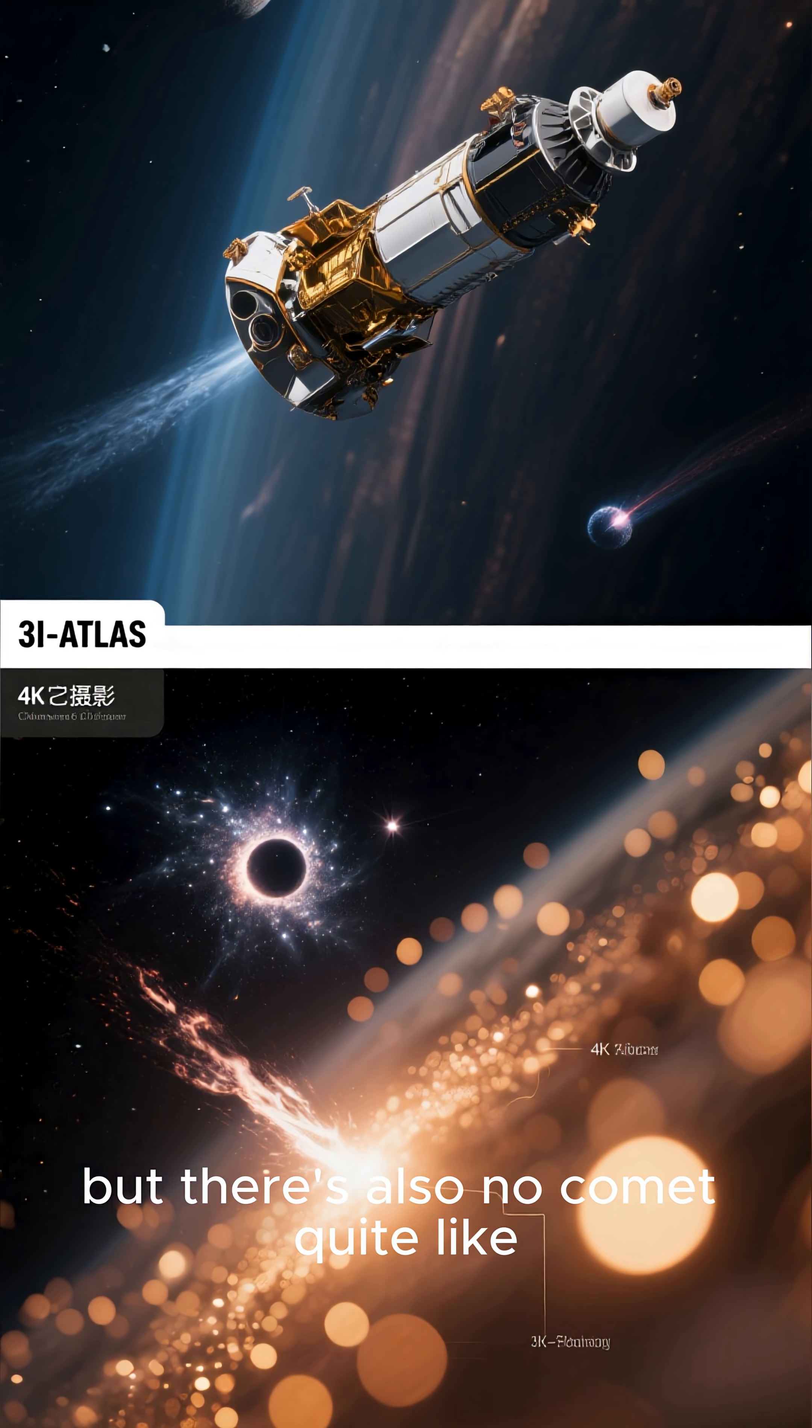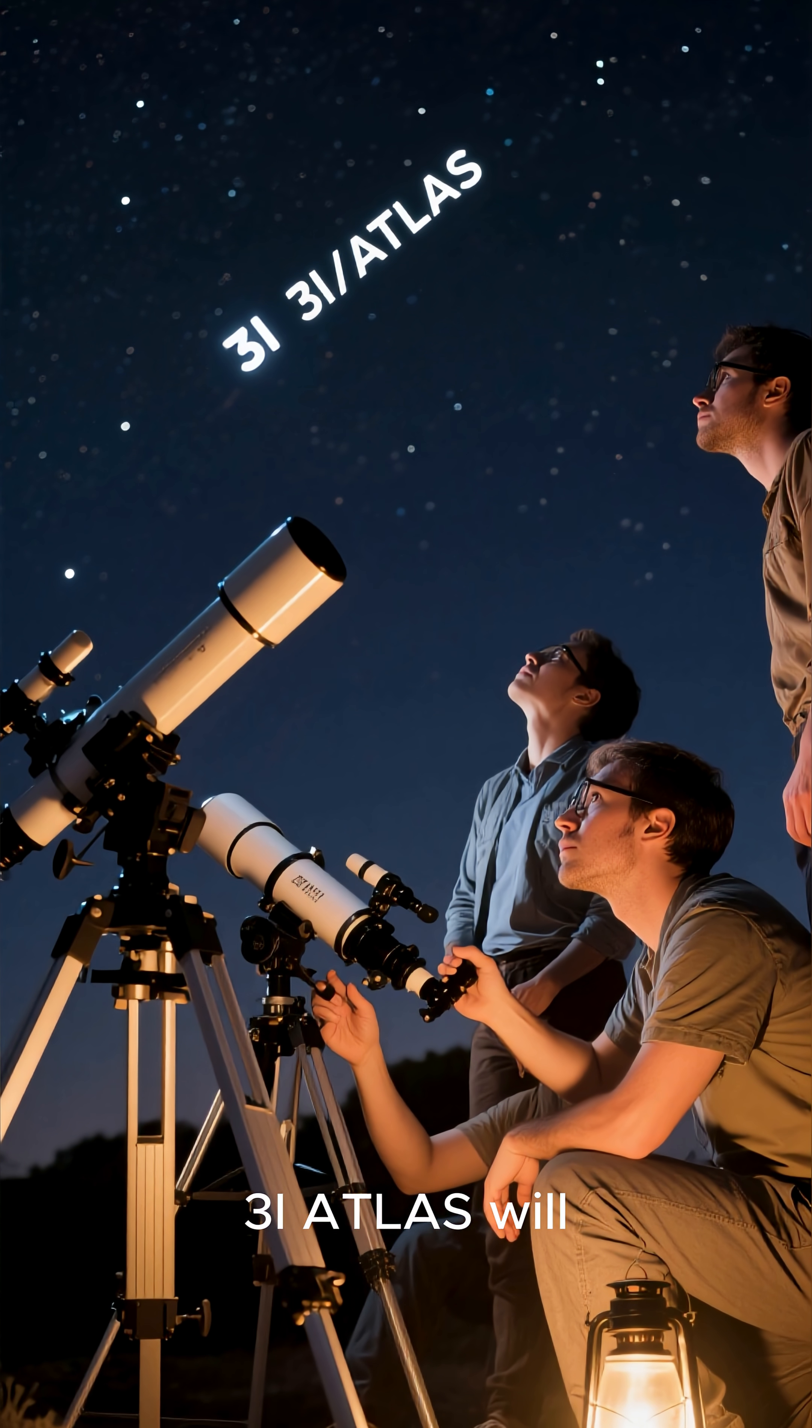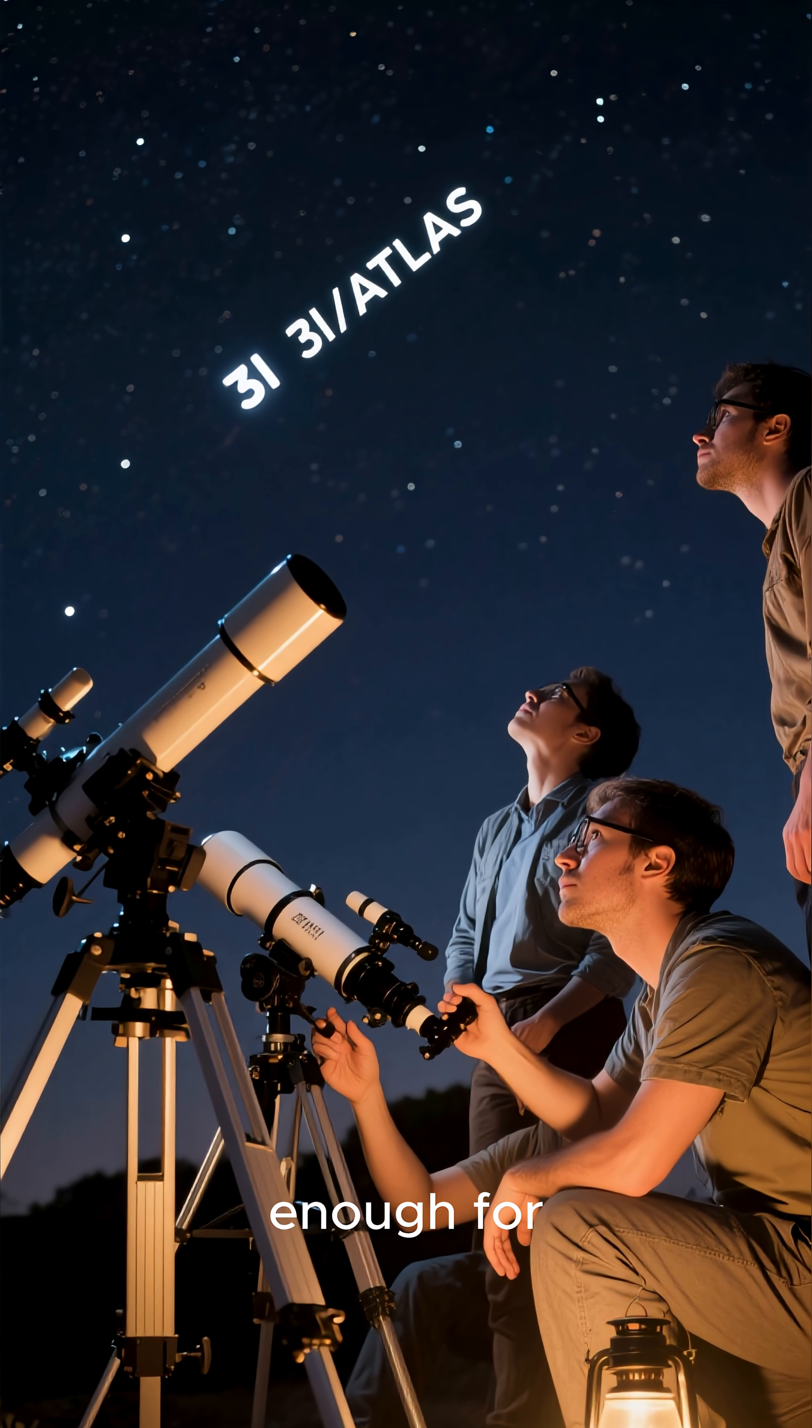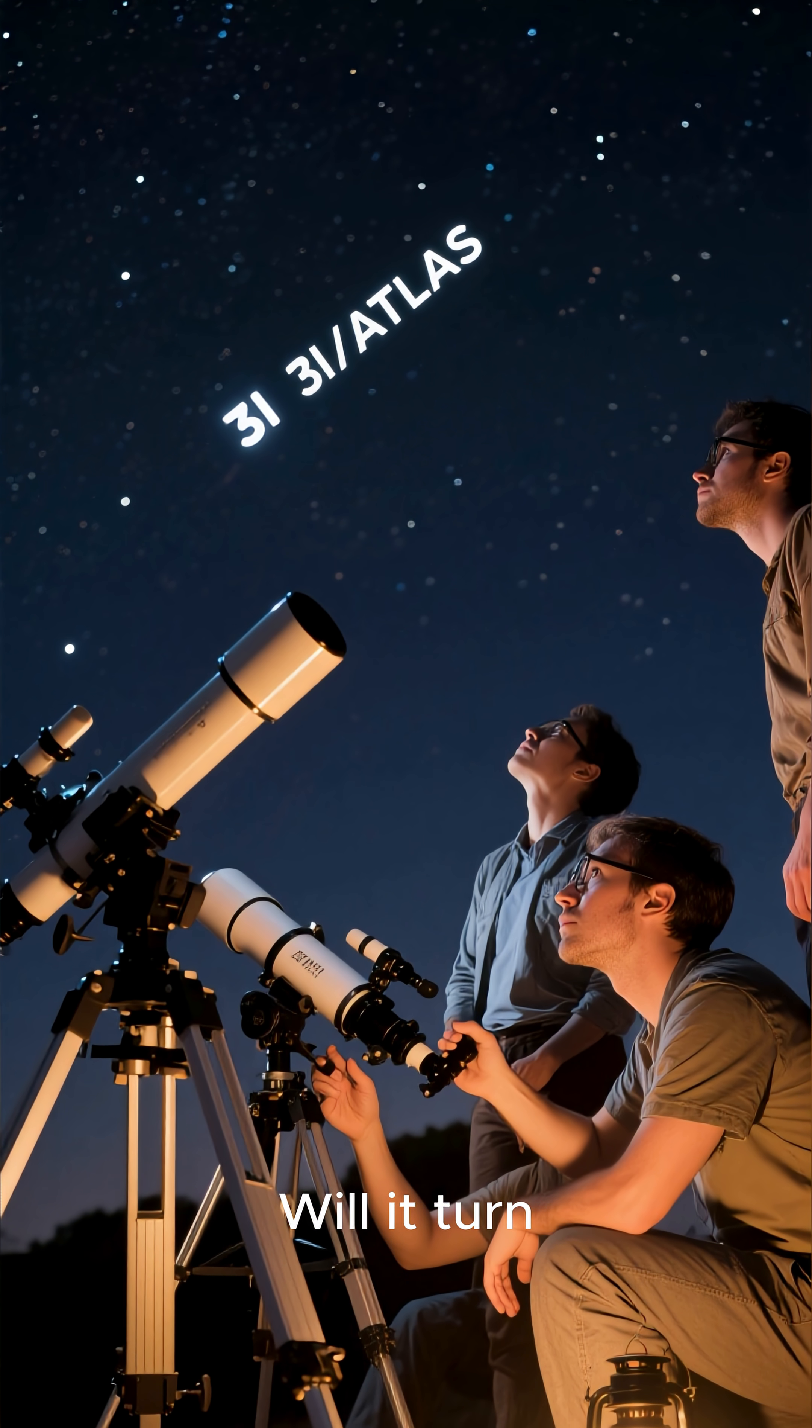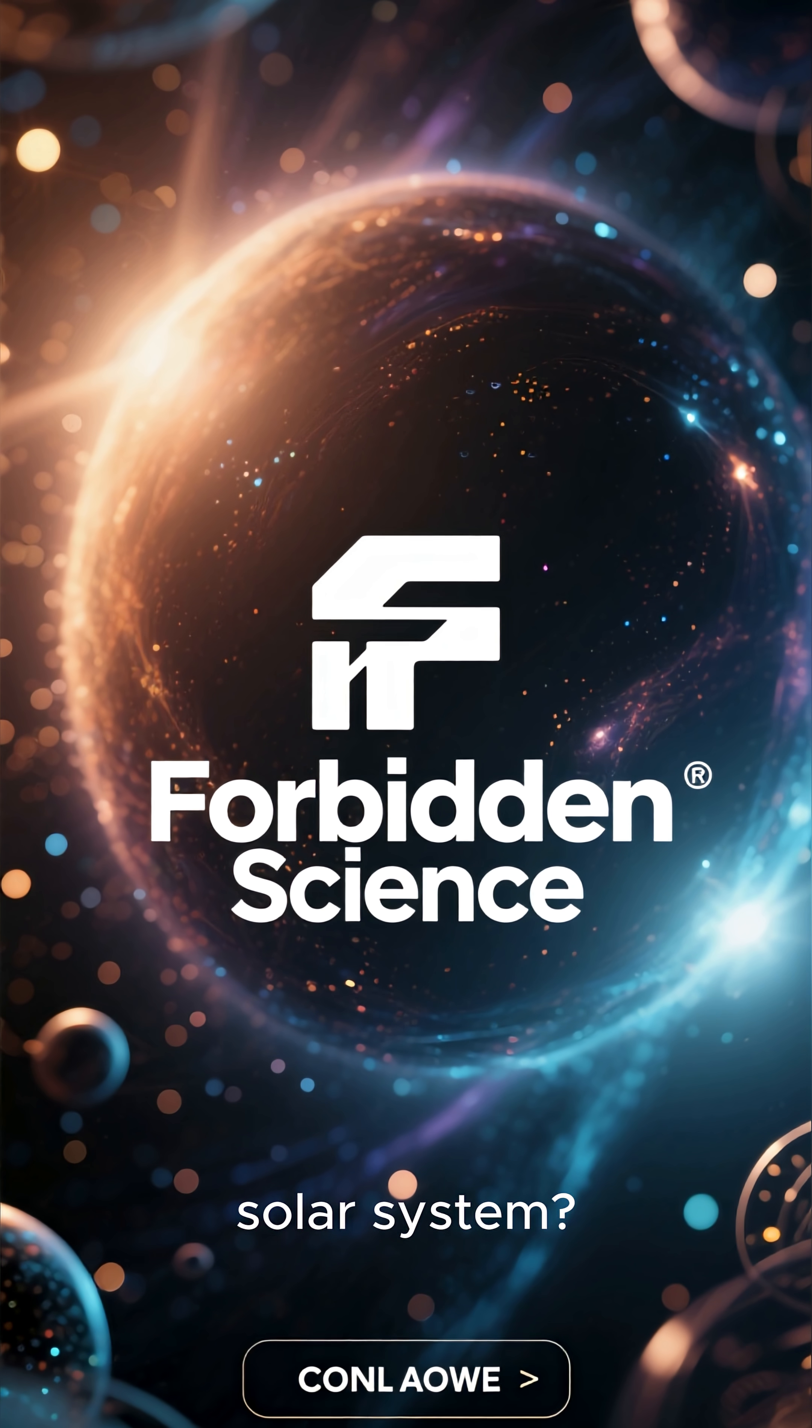but there's also no comet quite like 3i Atlas. In December, 3i Atlas will pass 270 million kilometres from Earth, close enough for telescopes to capture every flicker and hue. Will it turn another colour? Or reveal secrets from a different solar system?